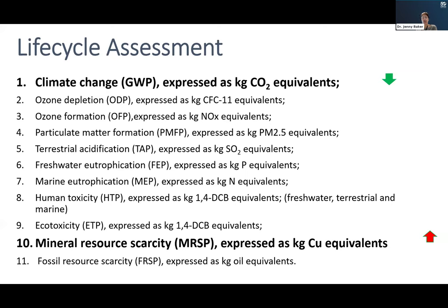When looking at sustainability, we've focused on the technical side: climate change emissions — typically CO2 — ozone depletion and formation, and a whole range of other factors. One key thing we see with renewable technologies is that while global warming potential gets enormous focus as the driver for moving to renewables, material resource scarcity often goes up. This can be seen nicely from a grid chart looking at the European electricity scenario.